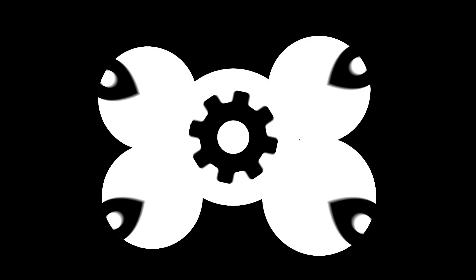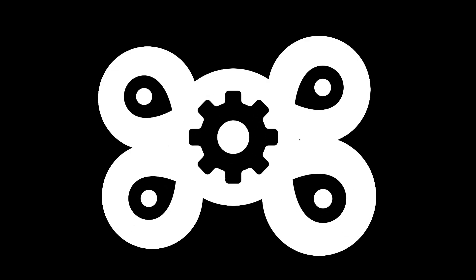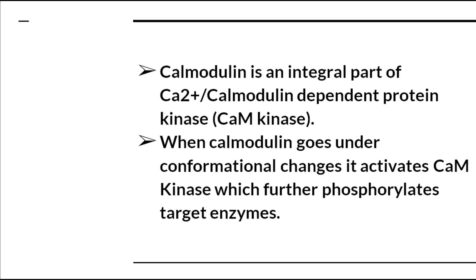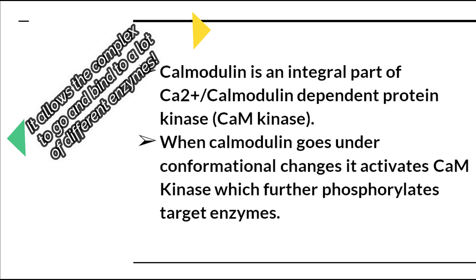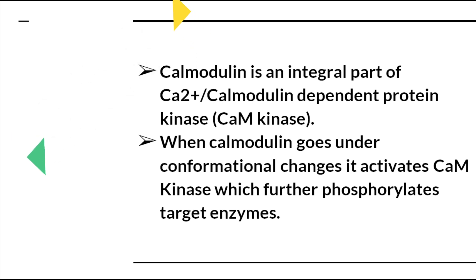The calmodulin molecule has a very important binding site for calcium on its structure — it is technically a protein. There can be four calcium ions that bind to one calmodulin molecule. Calmodulin is a very integral part of the complex, as the calcium-calmodulin complex helps to activate the calmodulin-dependent protein kinase. It allows the complex to go and bind to many important enzymes.